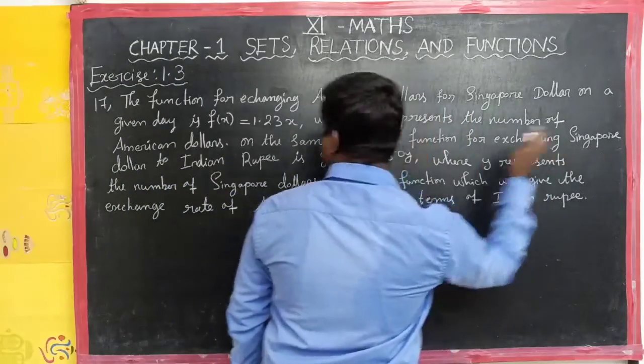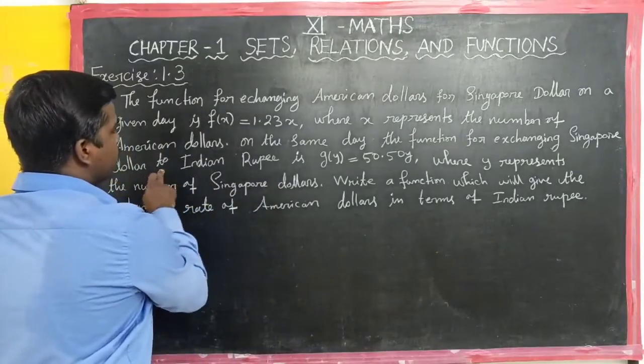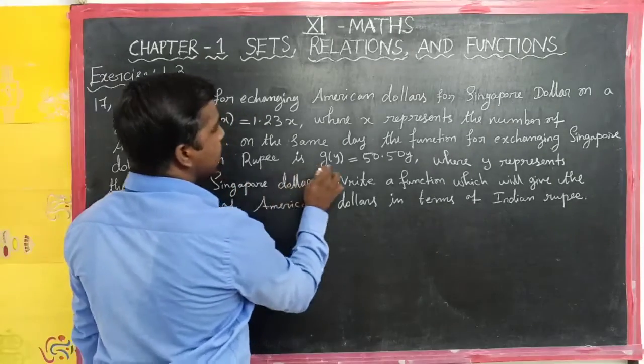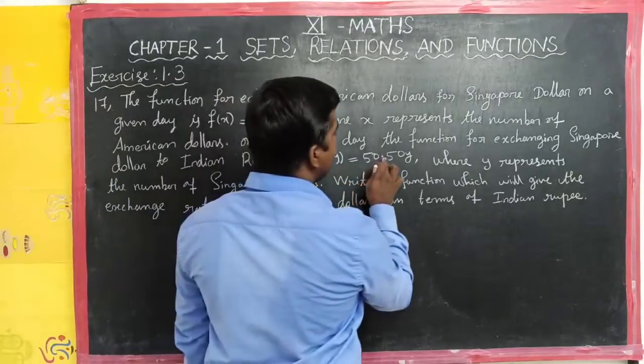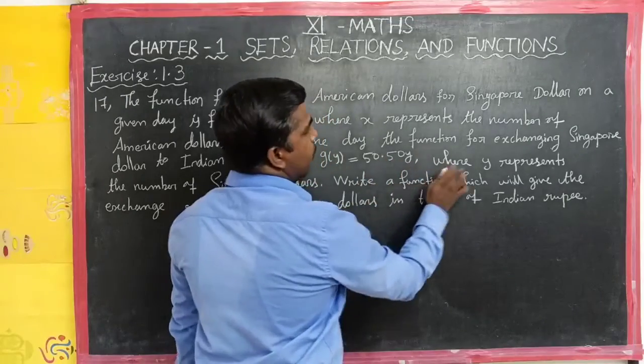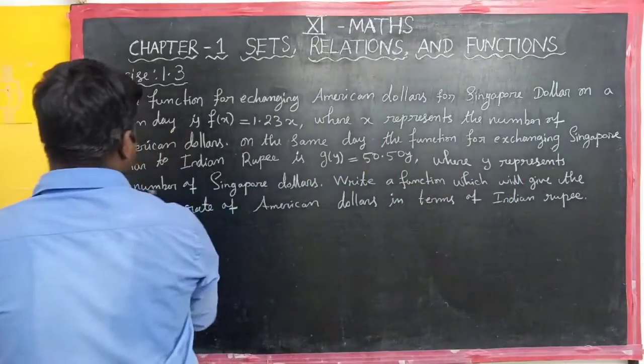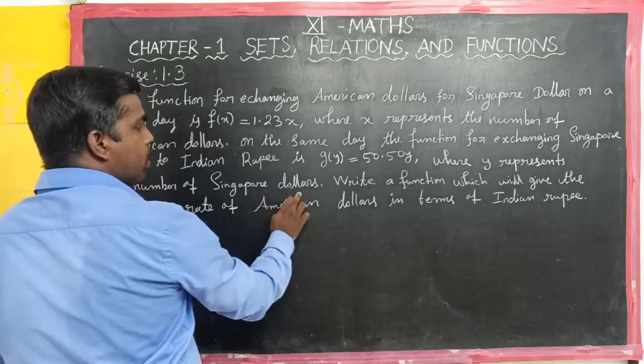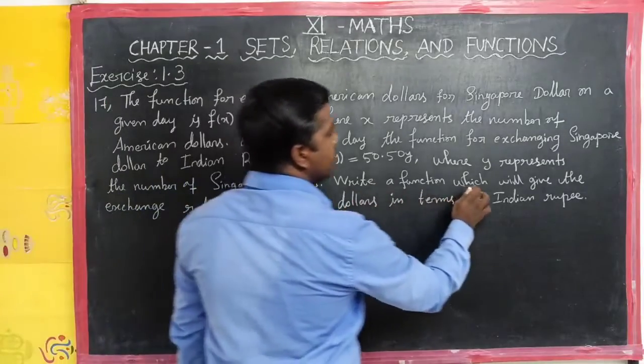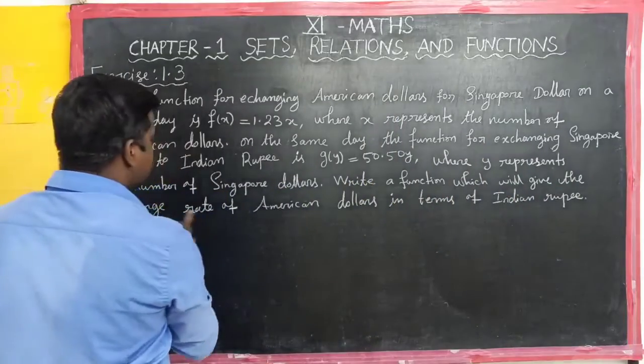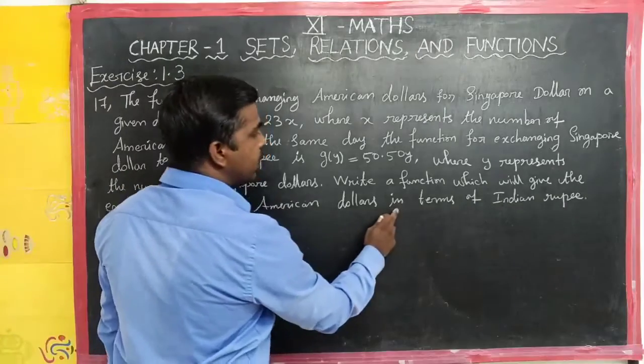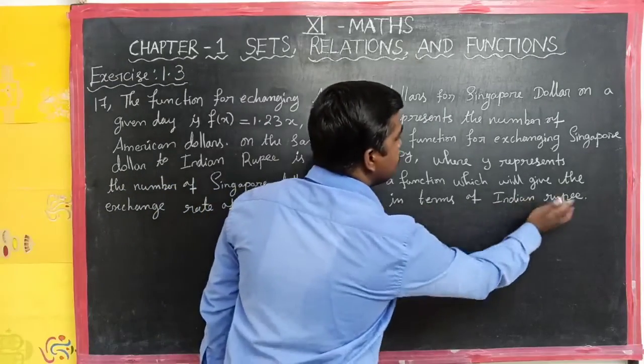The function for exchanging Singapore dollar to Indian rupees is g of y is equal to 50.50y, where y represents the number of Singapore dollars. Write a function which will give the exchange rate of American dollars in terms of Indian rupees.